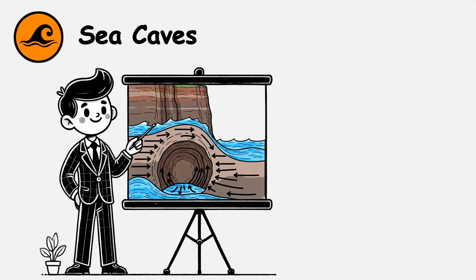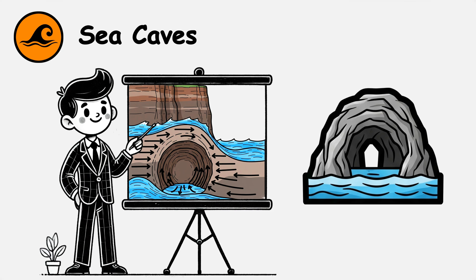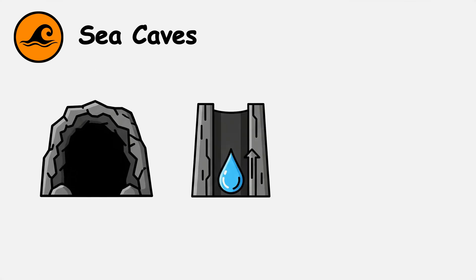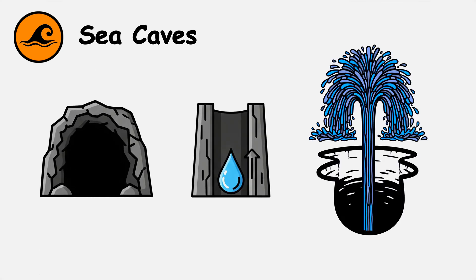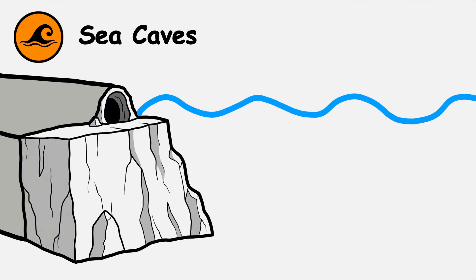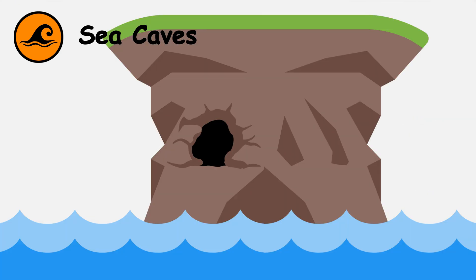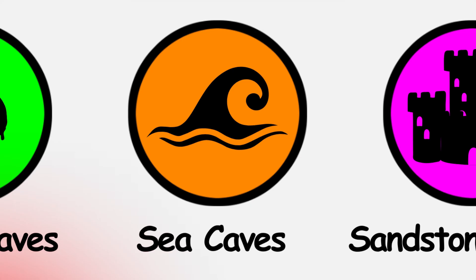Most sea caves remain accessible only during low tide. Some connect to blowholes — narrow vertical shafts that spray water skyward during high surf. As sea levels change or land uplifts, former sea caves can end up high above current shorelines, providing evidence of ancient coastlines.